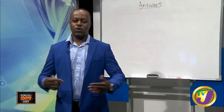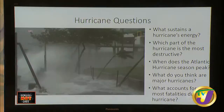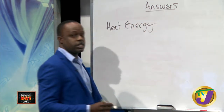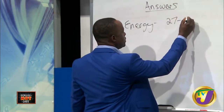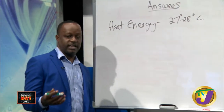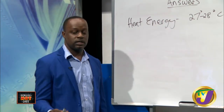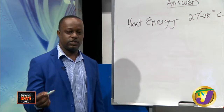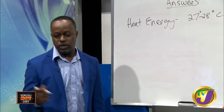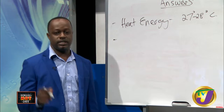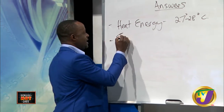Now let's go over those questions from the video. What sustains a hurricane's energy? Heat energy, or warm ocean waters - roughly 27 to 28 degrees Celsius. There is a constant flow of warm air being converted to water vapor that comes down as rain, keeping the hurricane engine going. What part of the hurricane is the most destructive? The eyewall - it has the strongest winds, concentrated around the low pressure center.